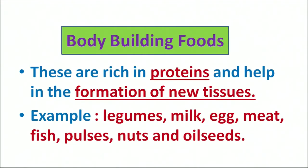The second category is body-building foods. These are rich in protein and their function is in the formation of new tissues. As we have discussed, cells get damaged, so for the formation of new tissues we need proteins in our diet. Examples include legumes, milk, egg, meat, pulses, nuts and oil seeds.